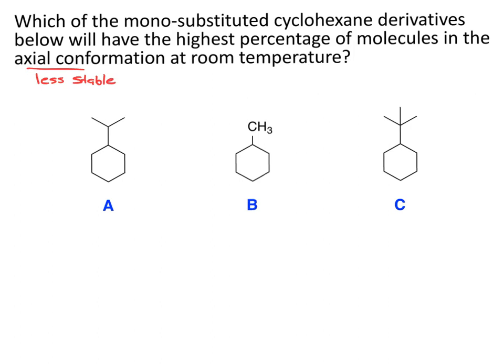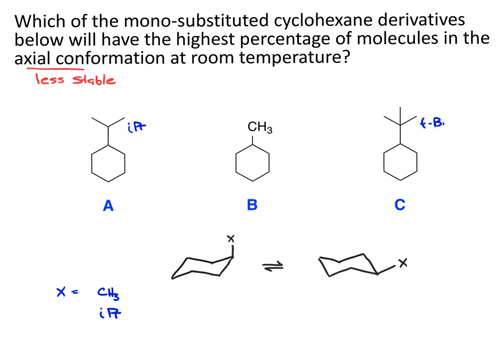So it requires a little bit more thought. Let's draw a generic chair with a substituent. In this conformation, I put it axial. After the ring flip, it'll become equatorial. Now let's look at our three substituents as the potential X group: the methyl group as X, the isopropyl group as X, and the tert-butyl group as X.